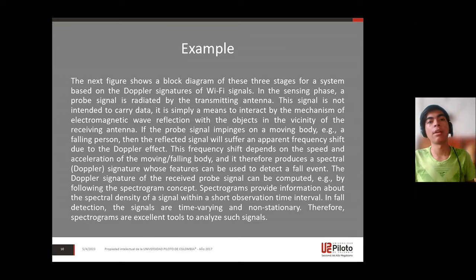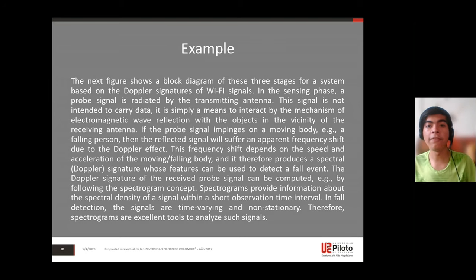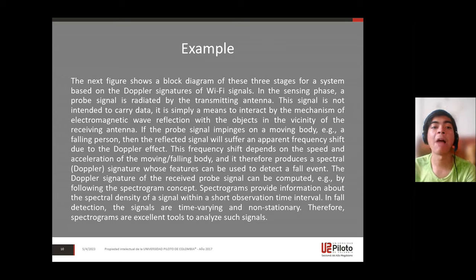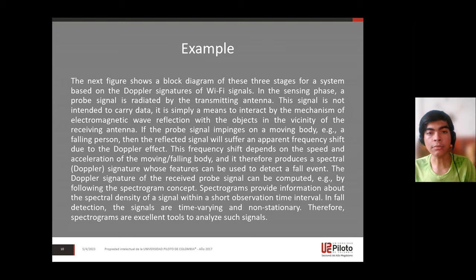The next figure shows a block diagram of the three stages for a system based on the Doppler signatures of Wi-Fi signals. In the first phase, a probe signal is transmitted by the transmitting antenna. This signal is not intended to carry data — it is a simple means to interact via electromagnetic wave reflections with objects in the vicinity of the receiving antenna.